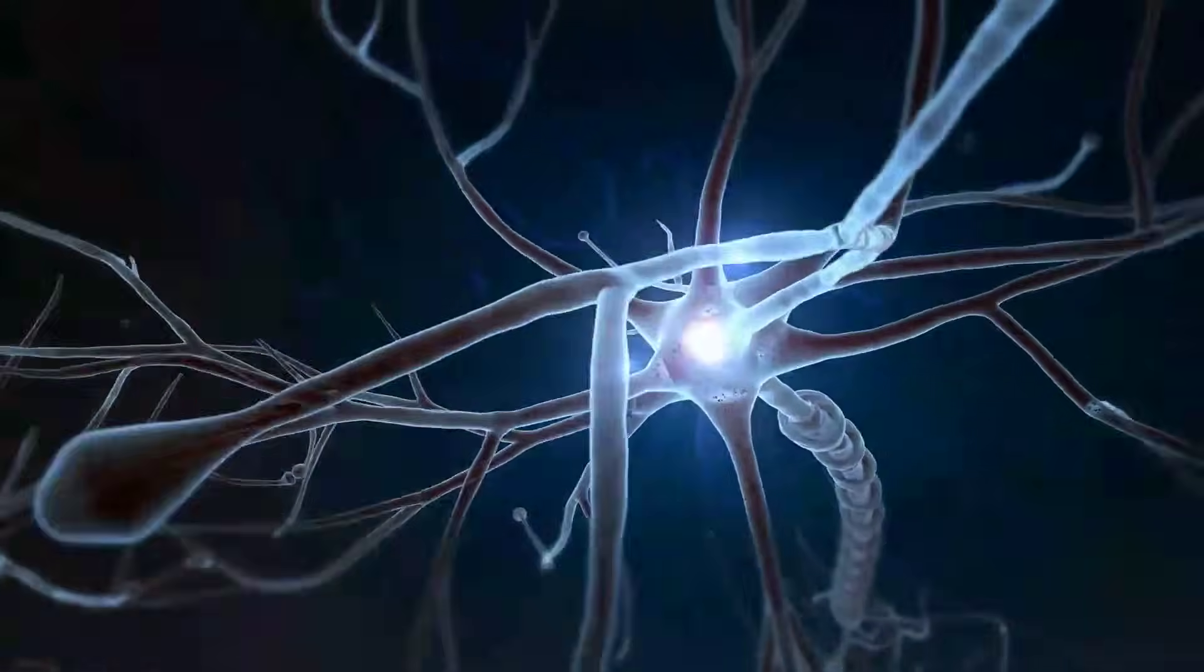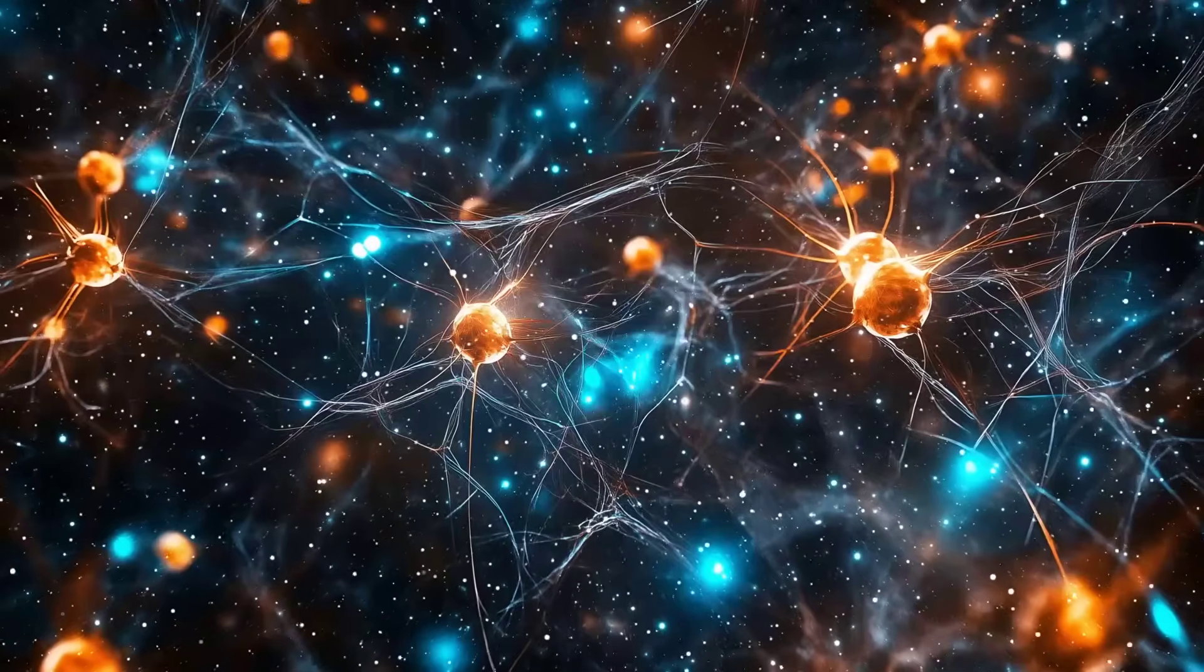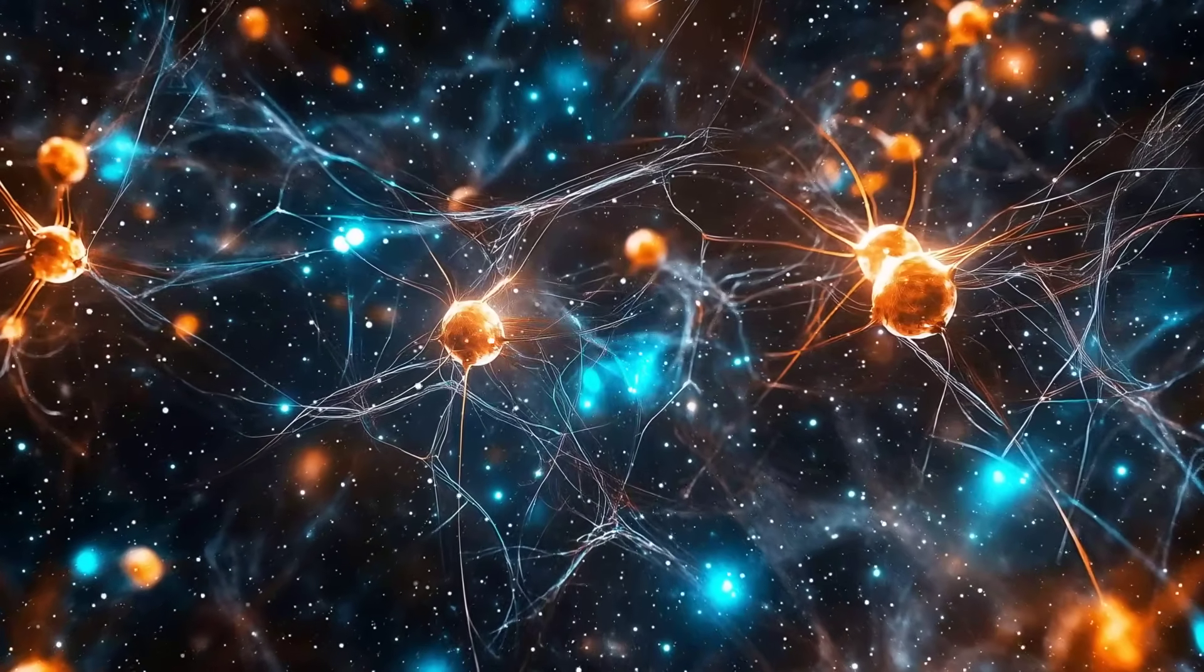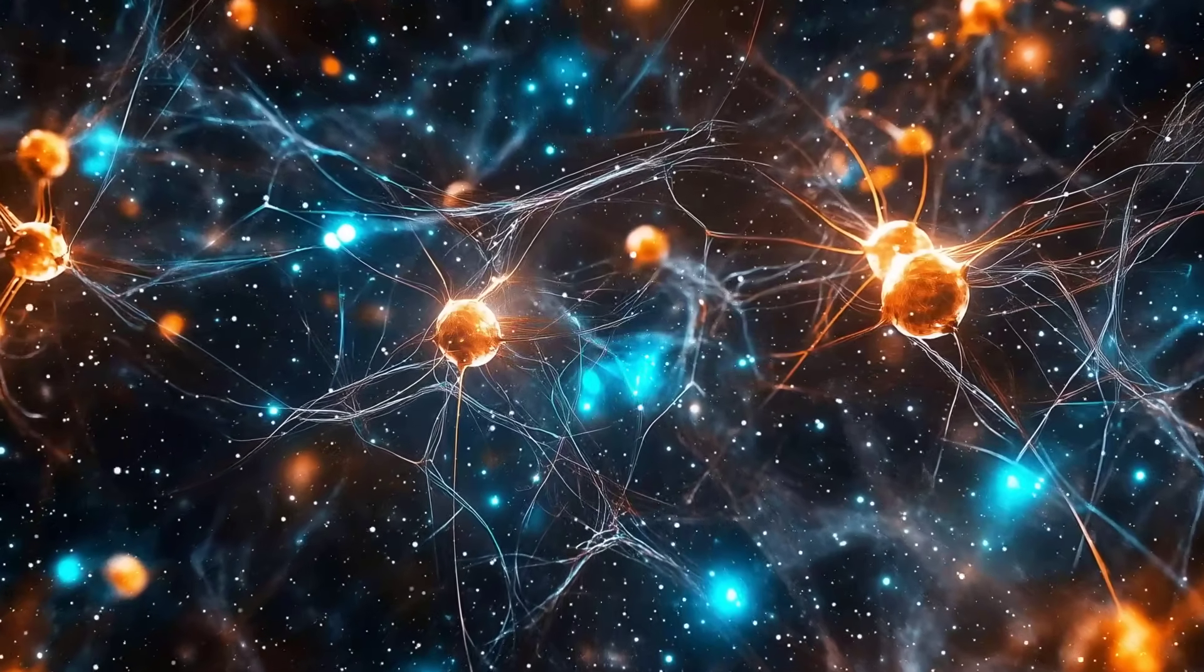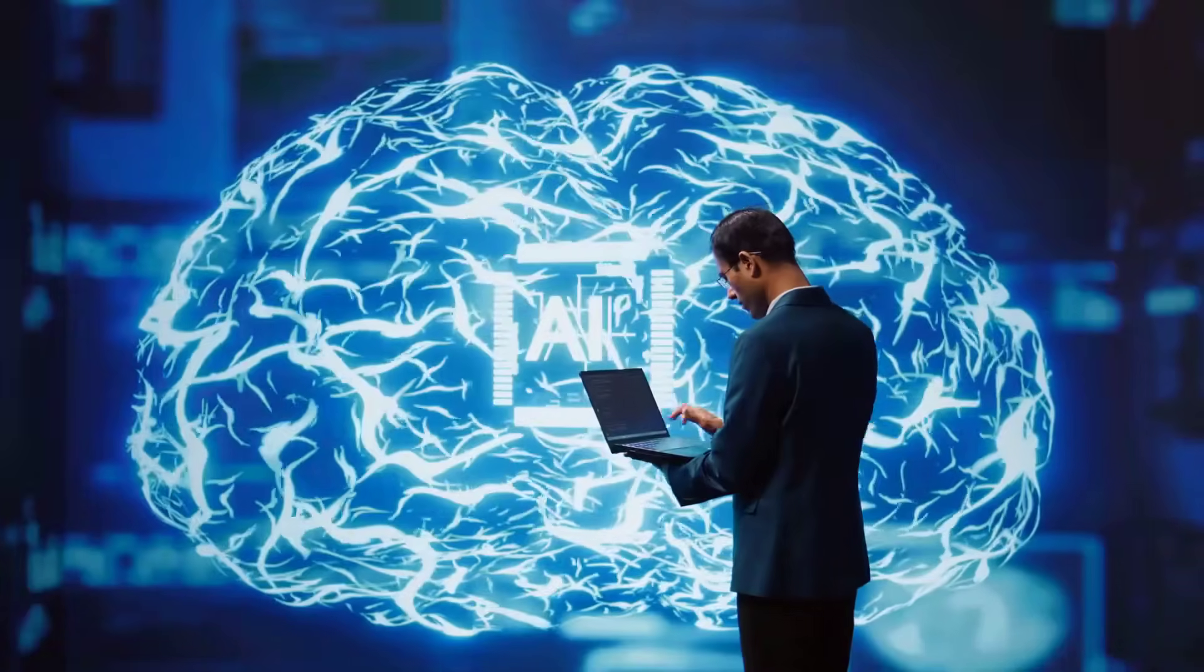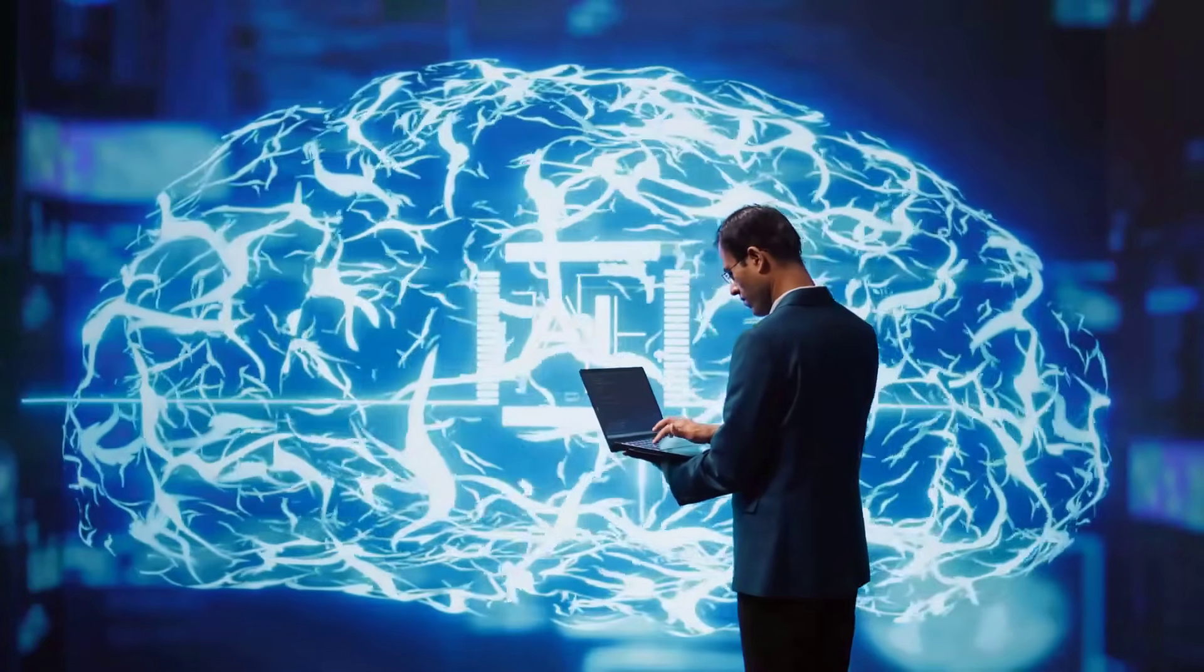But here's where it gets insane. Remember how I said your brain uses 20 watts? Your brain is an analogue computer. It doesn't use ones and zeros. It uses electrochemical gradients, continuous signals flowing through neurons. Analogue AI is literally mimicking the most powerful computer we know, the human brain.